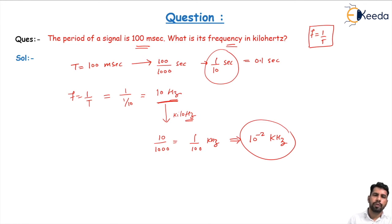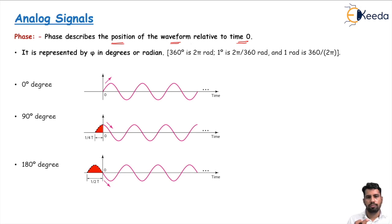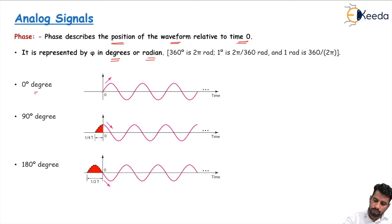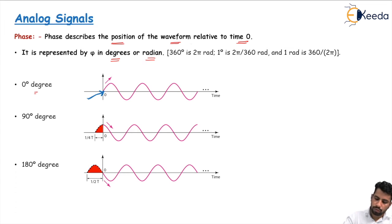The next characteristic is phase. Phase mainly describes the position of the waveform relative to time zero — meaning at time zero, from which position your wave started. This is measured as an angle in degrees or radians. At 0 degrees, time is zero and your signal originates from the origin — meaning the wave starts from zero amplitude at time zero. This is called 0 degree phase.